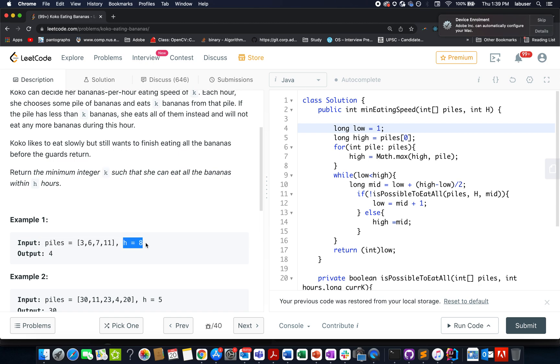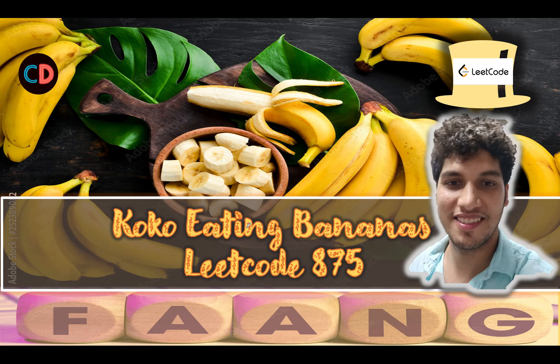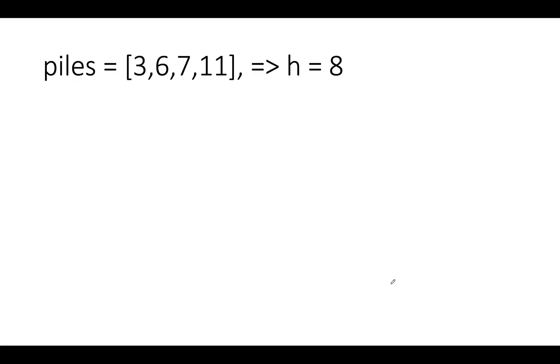We need to tell that value of k, the minimum one using which she is able to finish all the piles within the specified timestamp. The approach that we are going to use to solve this question will be binary search. So let's quickly move on to the presentation where I'll tell you how to go about the algorithm.